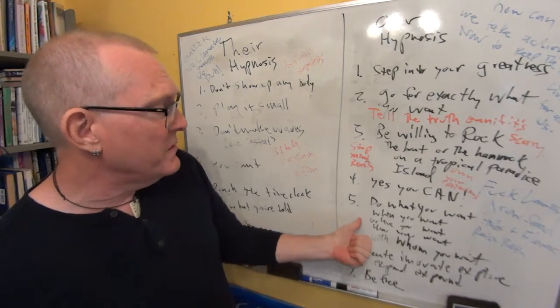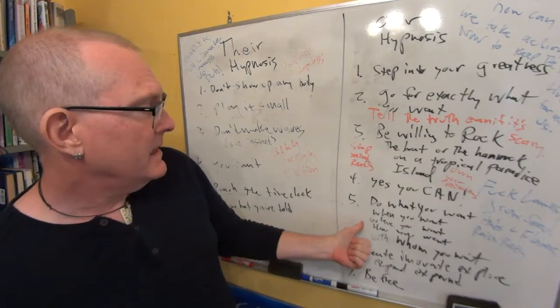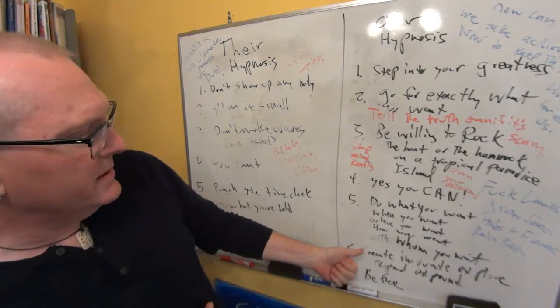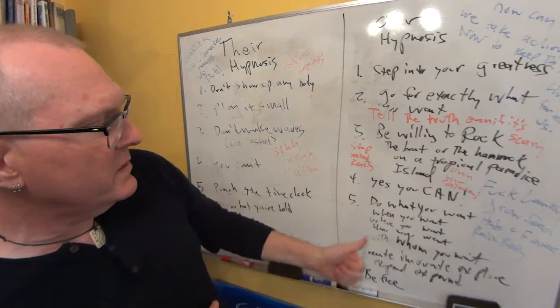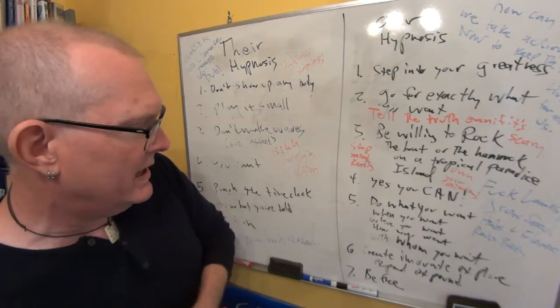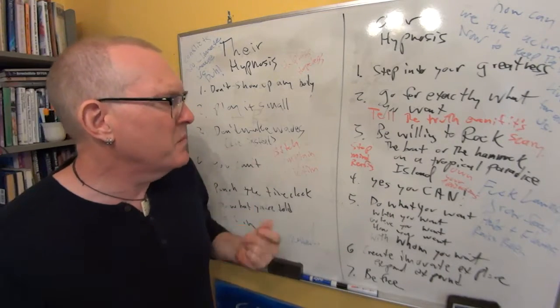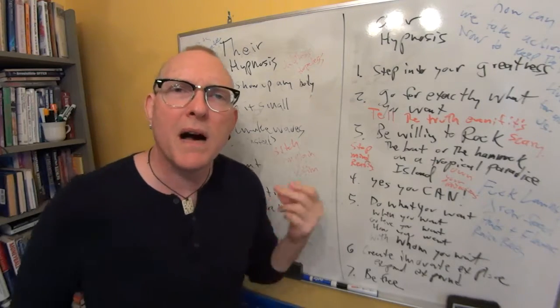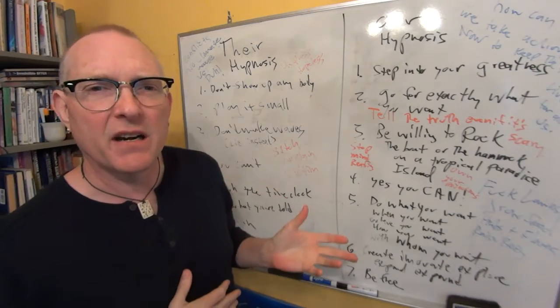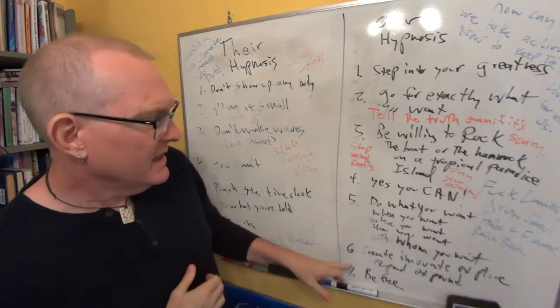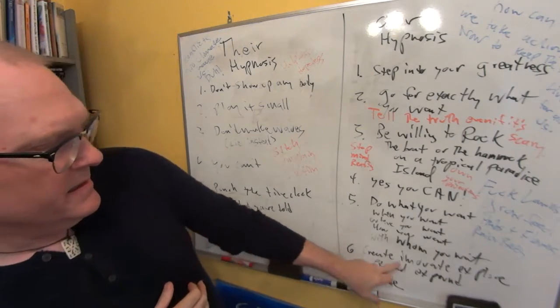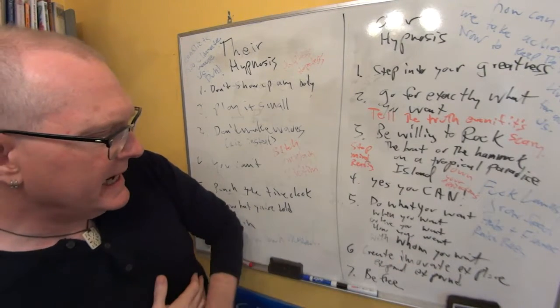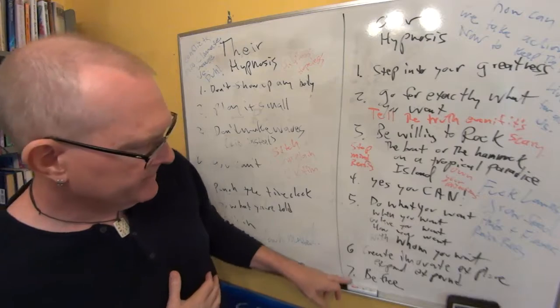Five, do what you want when you want. How you want. Where you want. Do what you want, when you want, where you want, how you want, with whom you want. Do what you want, when you want, where you want, how you want, with whom you want. And maybe you could change that to desire. Six, create, innovate, explore, expand, expound. Be free.